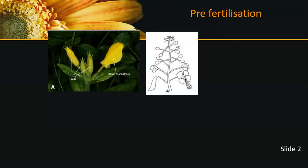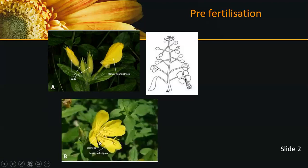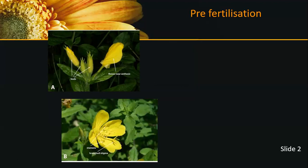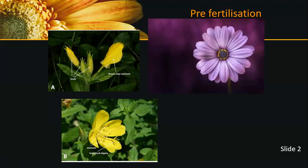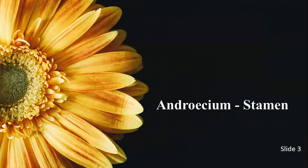From inflorescence, floral buds are produced. These floral buds open — this opening of floral buds is called anthesis — and they produce flowers. Different flowers are formed during the pre-fertilization time due to hormonal and structural changes, leading to flowering and the formation of sexual structures.